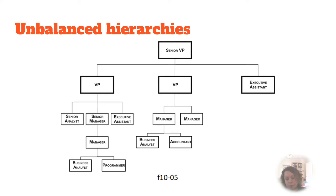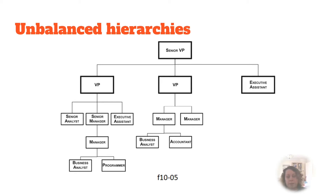Unbalanced hierarchies occur when the dimensional branches have varying numbers of levels and inconsistent depths, while still having a consistent parent-child relationship. The classic example is an organizational HR chart.